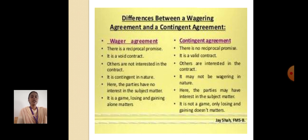Difference between wagering agreement and contingent agreement: In a wagering agreement, there is a reciprocal promise; in a contingent agreement, there is no reciprocal promise. A wagering agreement is a void contract; a contingent agreement is a valid contract. In a wagering agreement, others are not interested in the contract; in a contingent agreement, others are interested. A wagering agreement is contingent in nature; a contingent agreement may not be wagering in nature. In a wagering agreement, the parties have no interest in the subject matter; in a contingent agreement, the parties may have interest. In wagering, gaining or losing alone matters; in a contingent contract, only focus and gaining doesn't matter.